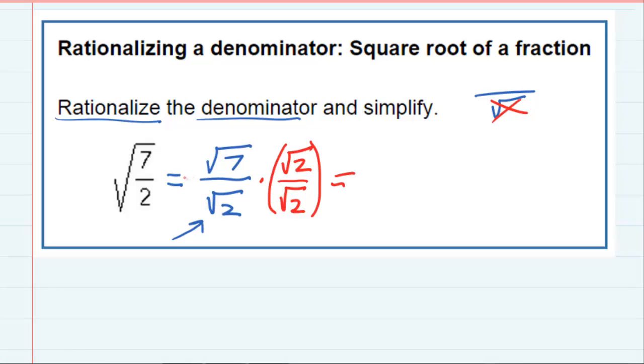By multiplying, in the top I would now have the square root of 7 times the square root of 2, which is the square root of 14, and in the bottom, the square root of 2 times the square root of 2 is the square root of 4.